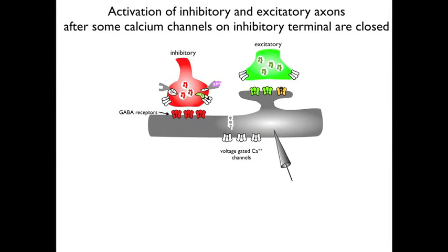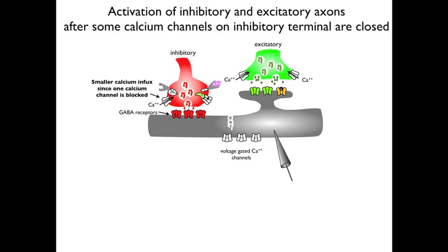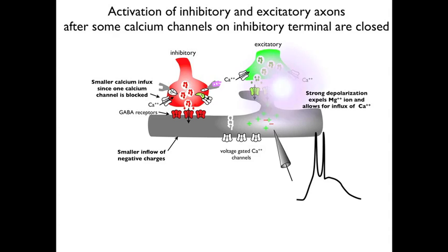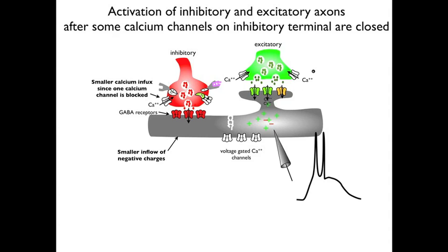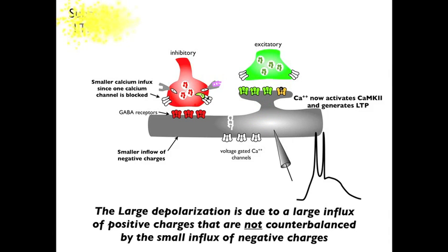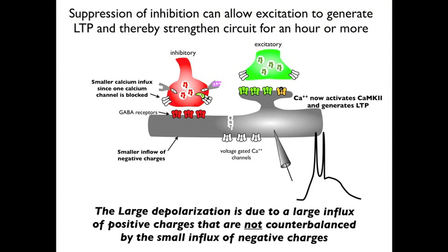In the final condition, some of the voltage-gated calcium channels on the inhibitory terminal have been blocked by the synthesis of endocannabinoids during previous activity in the circuit. Now when both fibers are simultaneously activated, a larger response is generated in the postsynaptic cell because of the partial suppression of the inhibitory input due to the closure of some of the voltage-gated calcium channels on the inhibitory terminal. The stronger depolarization then expels the magnesium plug, allowing for the influx of calcium through NMDA receptors. The calcium influx at the synapse then activates CAM kinase 2 and triggers the cascade that inserts additional AMPA receptors into the synapse, which strengthens the excitatory synapse. That strengthening is expressed as long-term potentiation, or LTP.